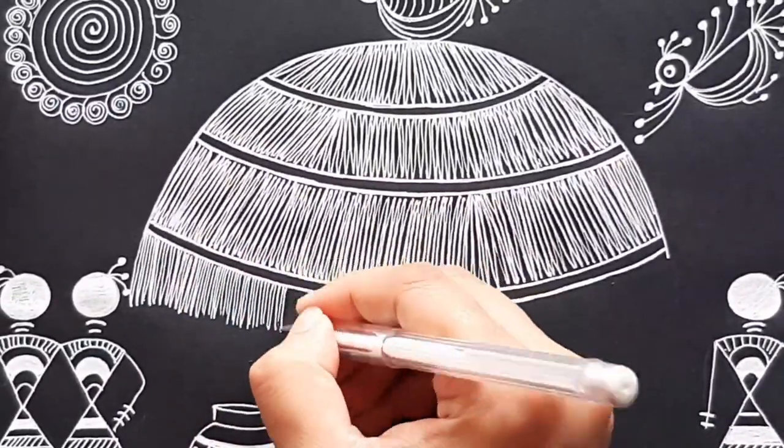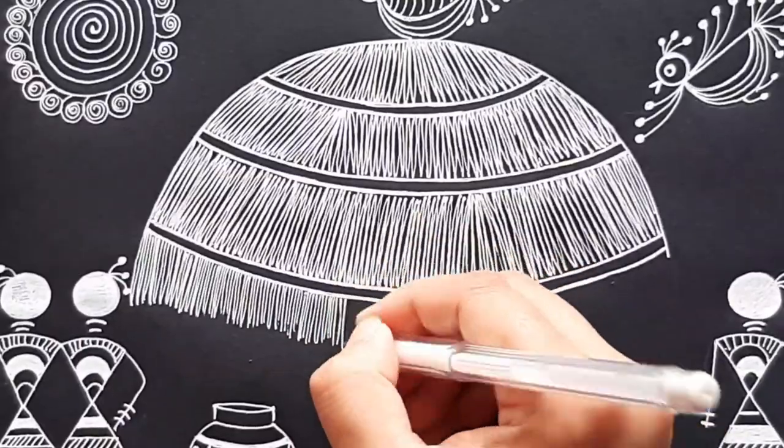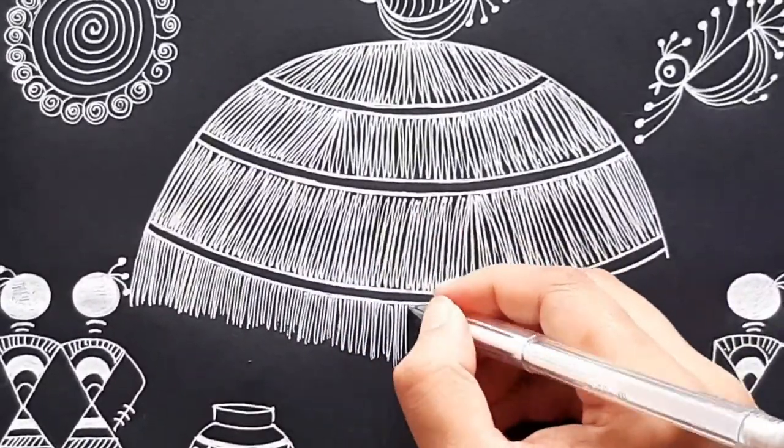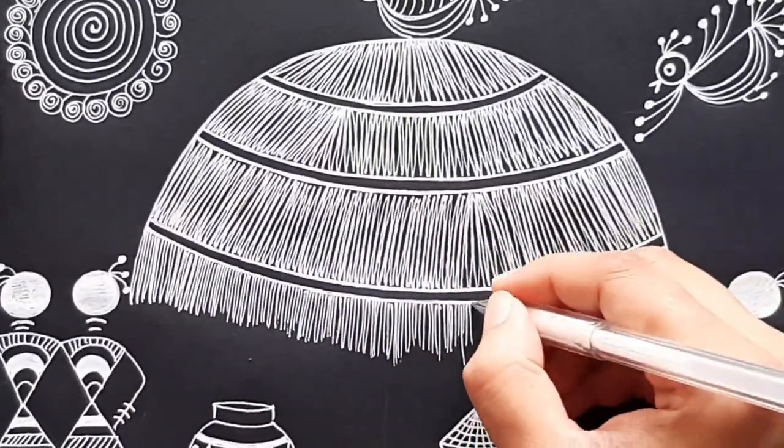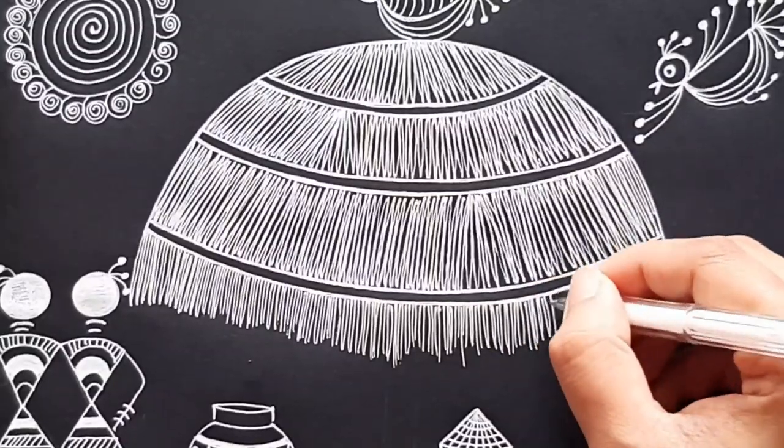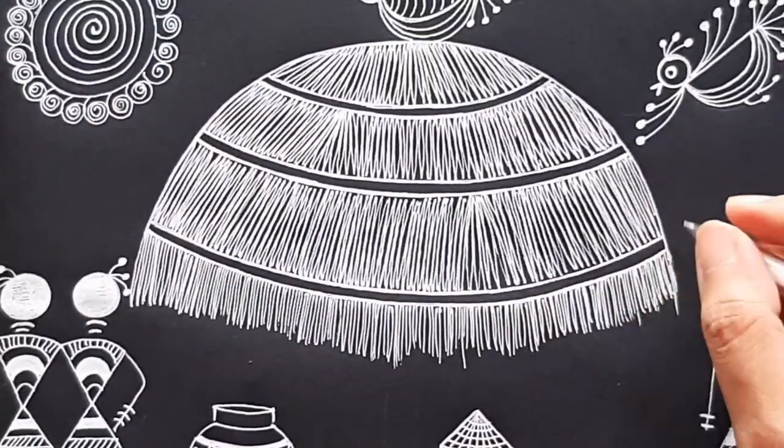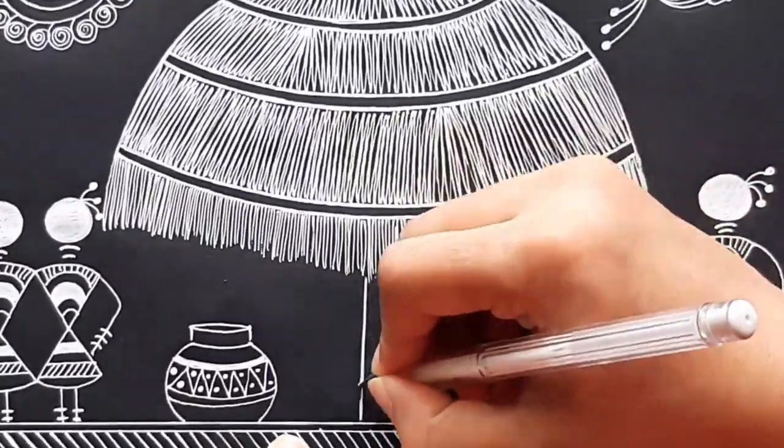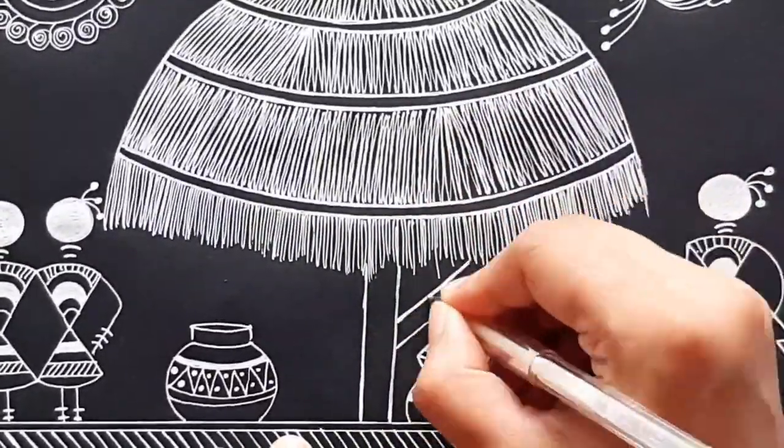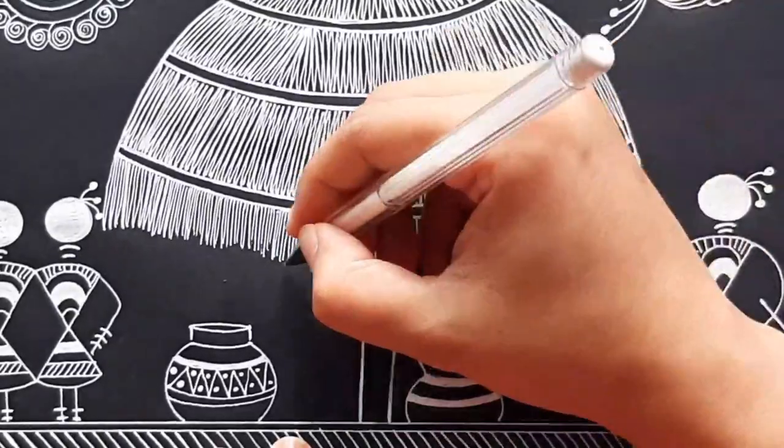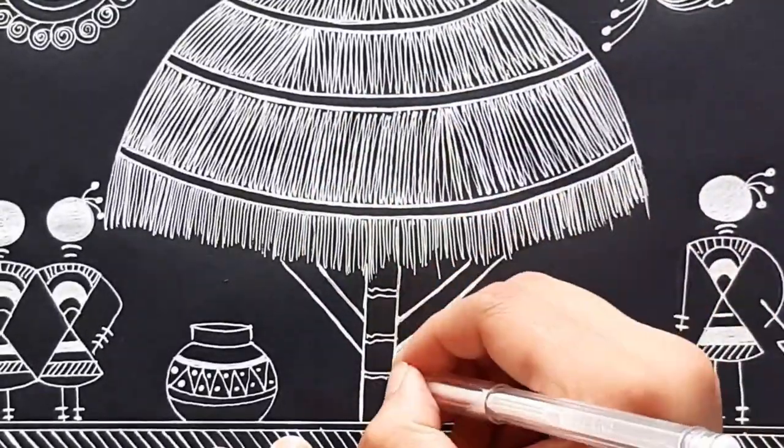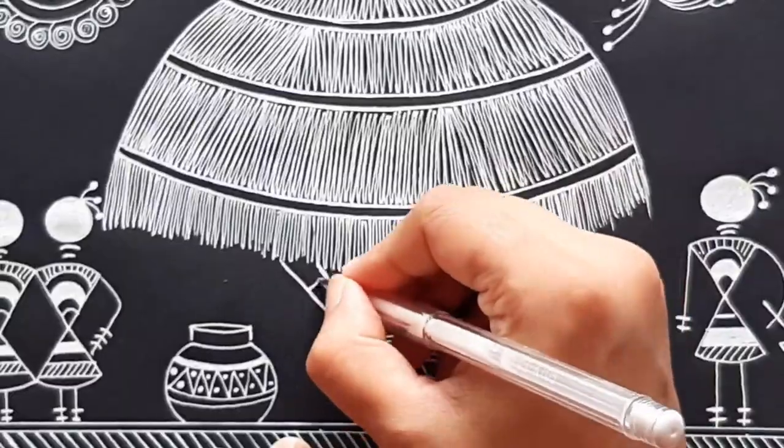I am using Uniball company white color gel pen, number 0.7. I am going to add a few bamboo sticks with bamboo texture on it and adding grass here and there.